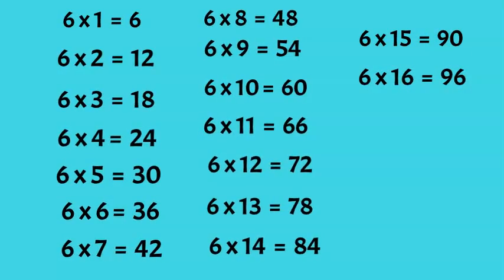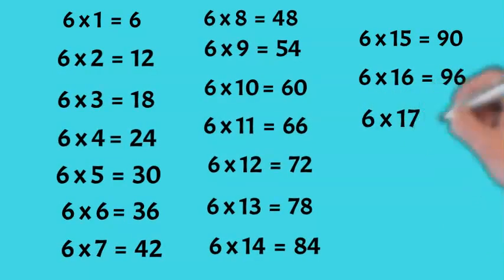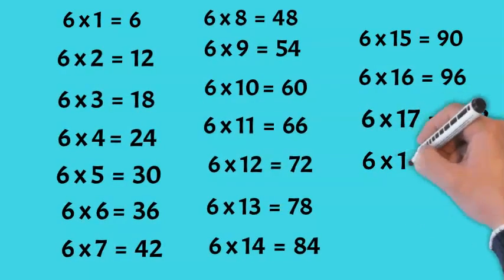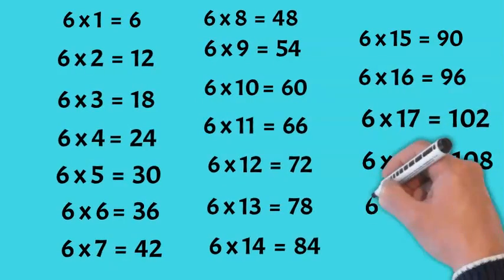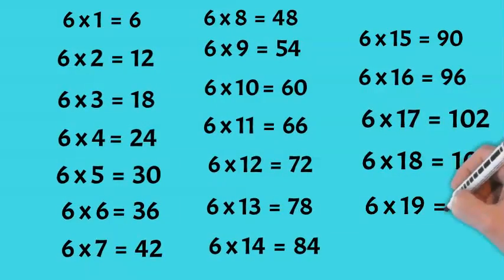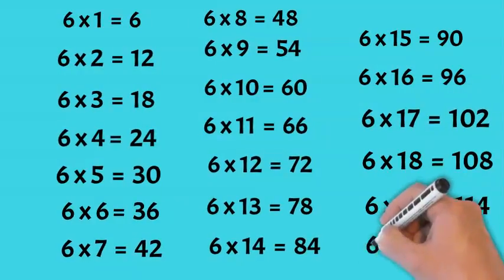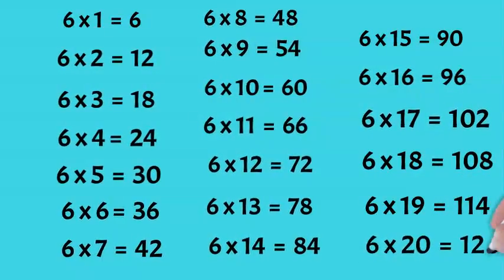6 x 17 is 102. 6 x 18 is 108. 6 x 19 is 114. 6 x 20 is 120.